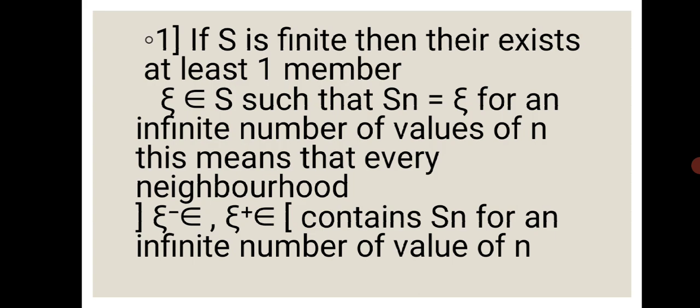From the first possibility, if S is finite, then there exists at least one member xi belonging to S such that Sn equals xi for an infinite number of values of n. This means that every neighborhood — the open interval (xi minus epsilon, xi plus epsilon) — contains Sn for an infinite number of values of n.